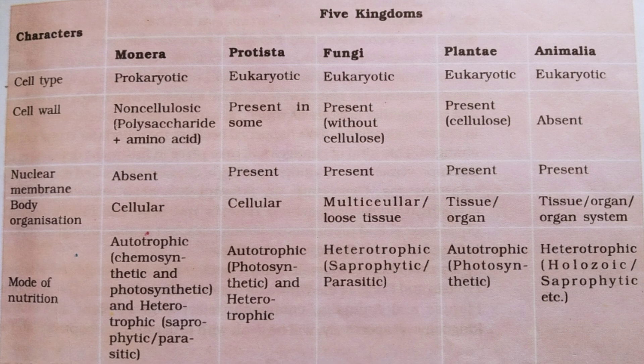In Monerans, nuclear membrane is absent; in Protists, Fungi, Plantae, and Animalia it is present. Body organization is cellular in Kingdom Monera and Protista; in Fungi it is multicellular or loose tissue; in Plantae it is tissue and organ level; and in Animalia it is tissue, organ, and organ system level. In Monerans, mode of nutrition is autotrophic and heterotrophic — autotrophic includes chemosynthetic and photosynthetic, and heterotrophic includes saprophytic and parasitic.